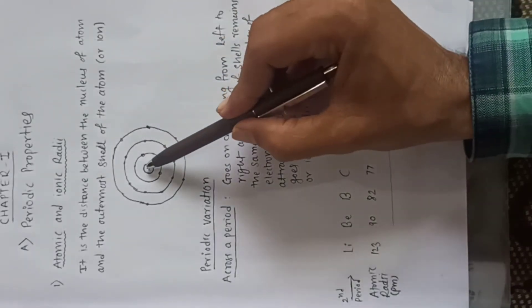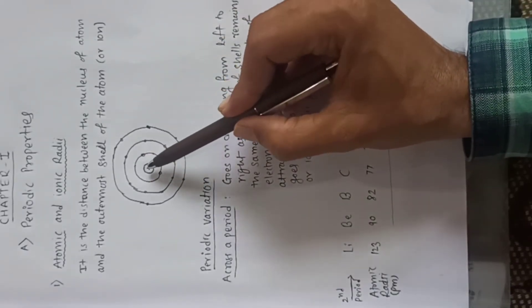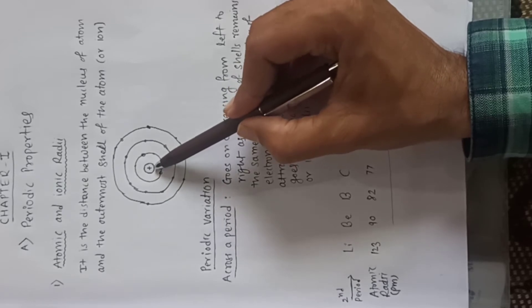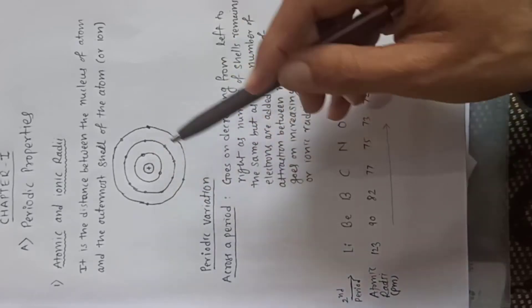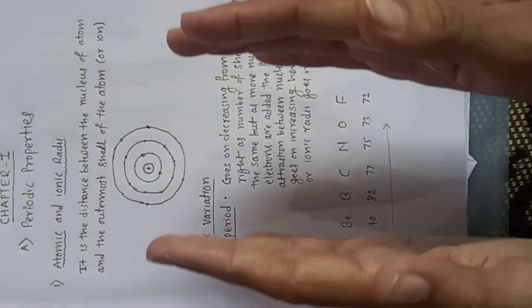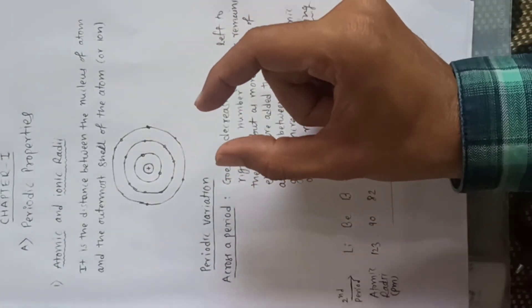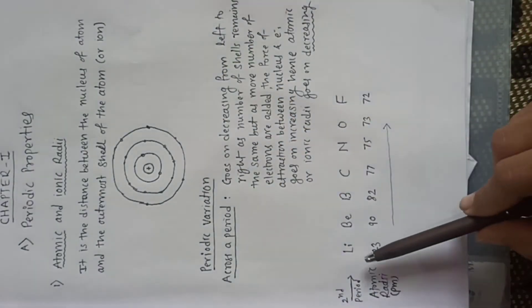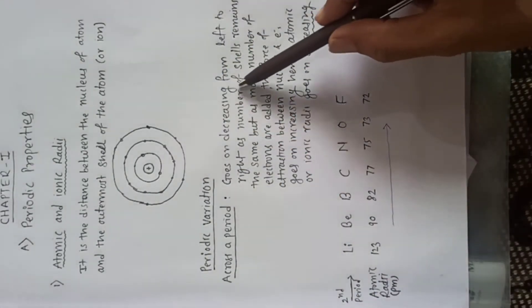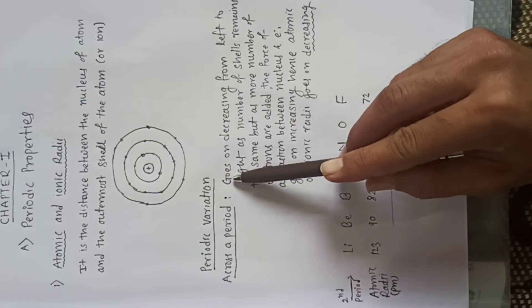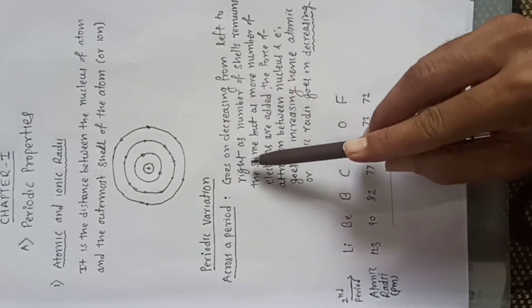Therefore, the electrostatic force of attraction between the nucleus and the electrons of this shell will go on increasing. More and more force will be there, and therefore there will be shrinking of the atom across a period. This is the reason why it goes on decreasing from left to right.